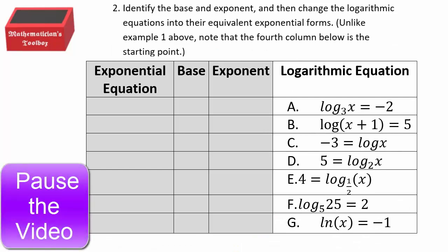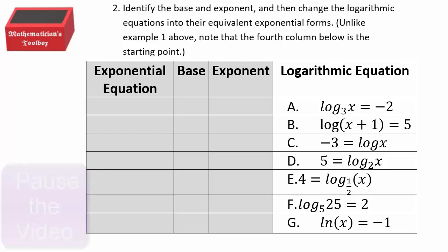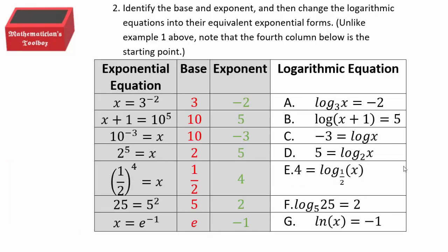Now going backwards: given a logarithmic equation, identify the base and exponent and rewrite it as an exponential equation. For example, log base 3 of x = −2 means base 3, exponent −2, so 3⁻² = x. In part b, there's no written base, which means it's base 10, so 10⁵ = x + 1.